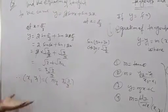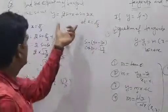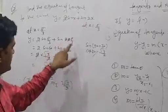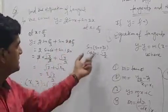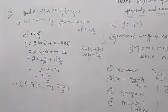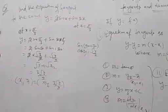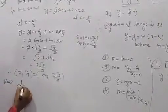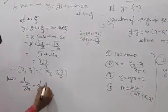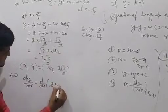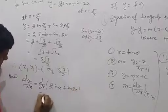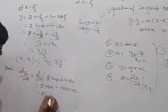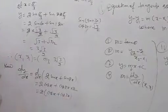Any doubt? Very simple — just put the value x = π/3 into the equation to get y = 3√3/2. Now find dy/dx: d/dx of (2 sin x + sin 2x) equals 2 cos x + cos 2x · 2. Taking 2 as common, dy/dx = 2(cos x + cos 2x).